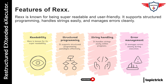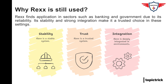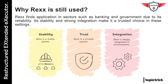Here's something interesting: despite being over 40 years old, REXX is still going strong on mainframes today. Why? Because it works. It's reliable, stable, and already built into so many enterprise systems. Banks, insurance companies, government agencies — they all still use REXX scripts to keep things running smoothly behind the scenes. And because it's been tested and trusted for decades, it's still the go-to tool in many critical environments.